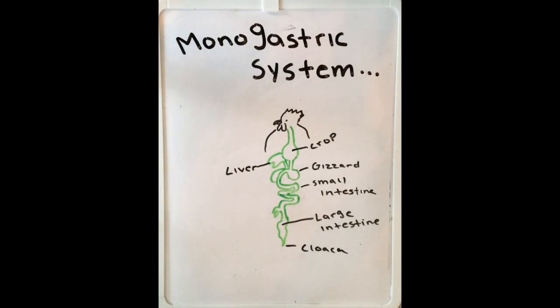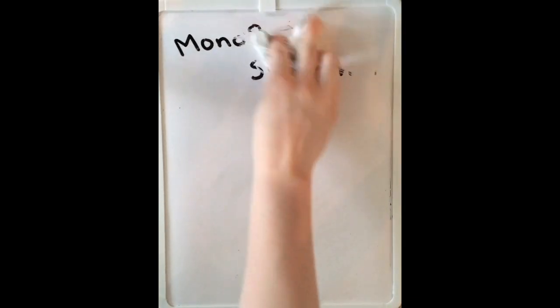And just a little fun fact as we move on, the dog actually has the shortest digestive system of most animals, taking roughly eight to nine hours for the entire digestion process.